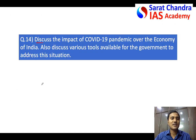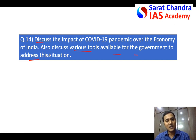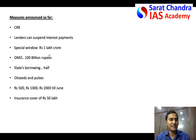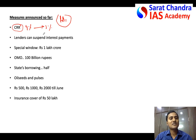The question also asks about various tools available to the government. You should not only mention available tools but also what tools the government has already used. For example, the Reserve Bank of India reduced the Cash Reserve Ratio from 4 percent to 3 percent, so banks got 1 percent of their money back from RBI and now have more money to lend to the corporate sector, which was in trouble because of COVID-19.